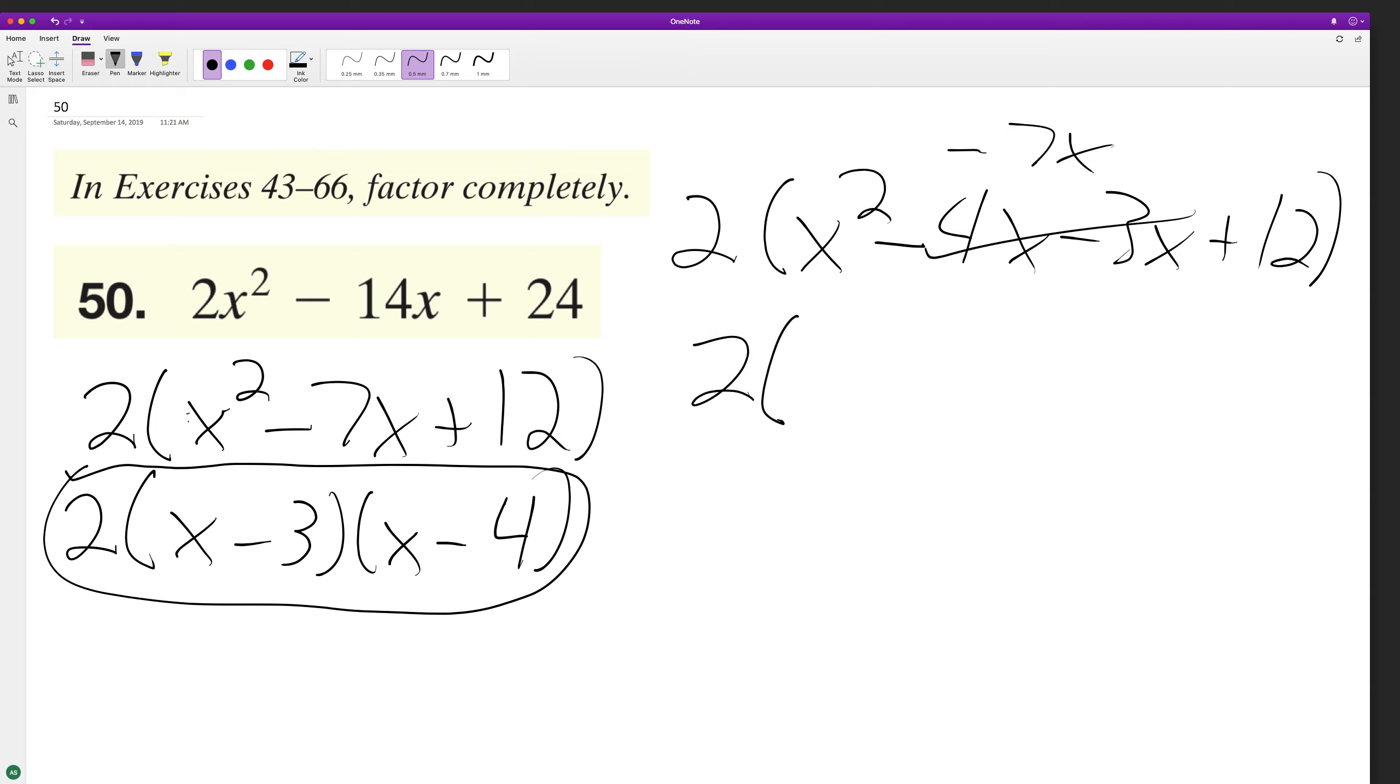Distribute the 2 through again: 2x squared minus 14x, and 12 times 2 is plus 24. So that works out. This is correct.